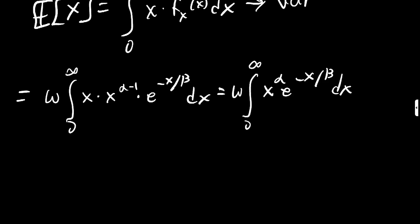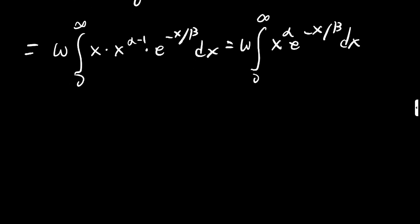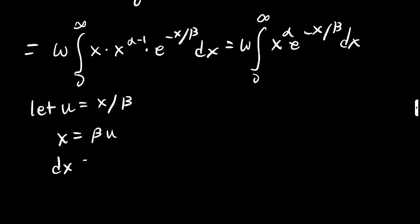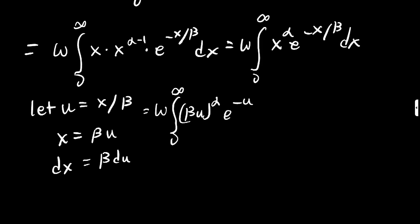There is a neat trick: we're going to use u-substitution to get this in the form of a gamma function. We let u equal x over beta, rearranging to get x equals beta times u, which means dx is just beta du. So let's put these substitutions in — this integral becomes omega times the integral from 0 to infinity of beta u to the alpha, times e to the negative u, times beta du.